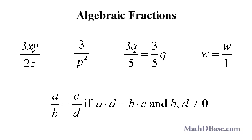Any two algebraic fractions, a over b and c over d, are equal to each other if a times d is equal to b times c, provided that neither b nor d is equal to 0.